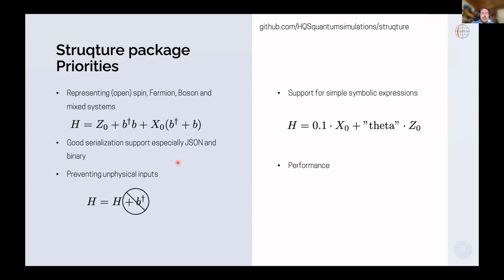The core functionality is the exchange library, so we need as a highest priority good serialization support, especially to JSON, because we want users to be able to store the input, run the simulation without any problem on maybe a different tool three years later. We also want to have good support for REST communication over the network.